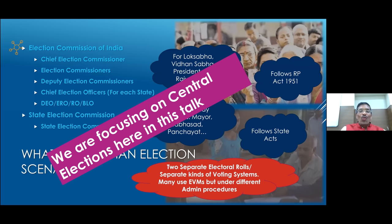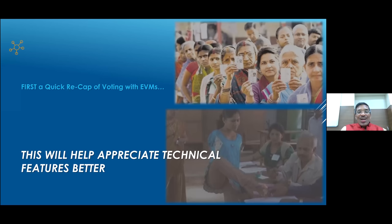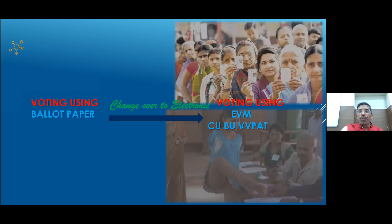In this talk, we will focus on the central elections. A quick recap of voting with EVMs: until almost the entire part of the last century, voting was carried out with ballot paper. With the changeover to electronics, voting uses EVMs. The EVMs comprise three units: the Control Unit (CU), the Ballot Unit (BU), and the Voter Verifiable Paper Audit Trail (VVPAT).